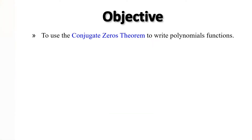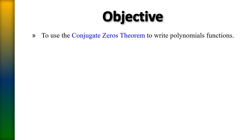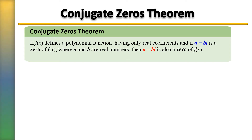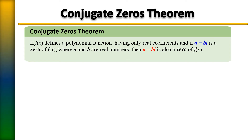We're going to use the Conjugate Zeros Theorem to write polynomial functions. It defines a polynomial function having only real coefficients, and if a plus bi is a zero of f(x), where a and b are real numbers, then a minus bi is also a zero of f(x).